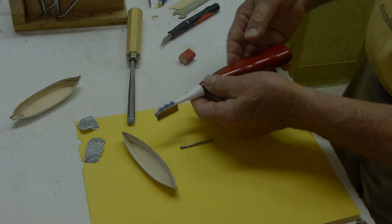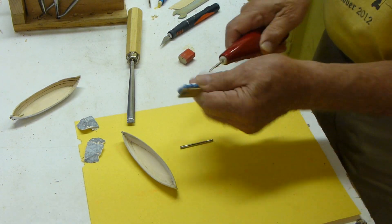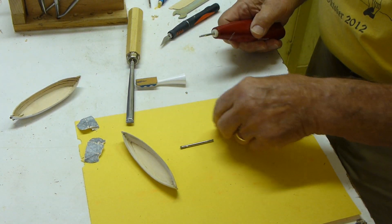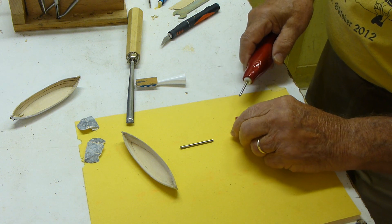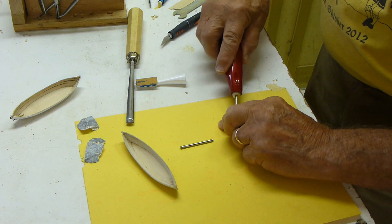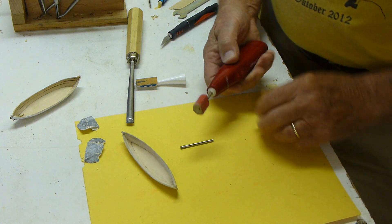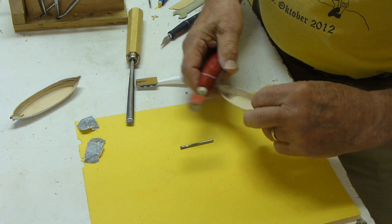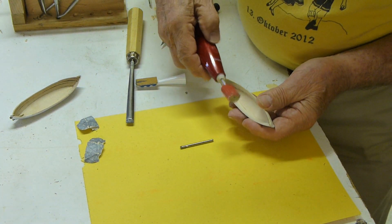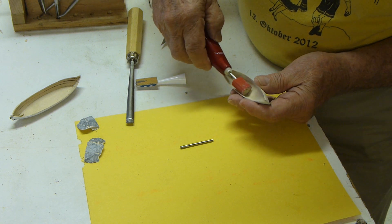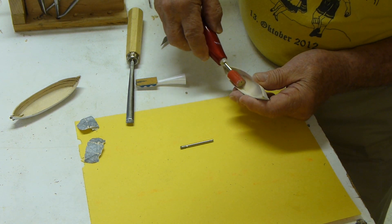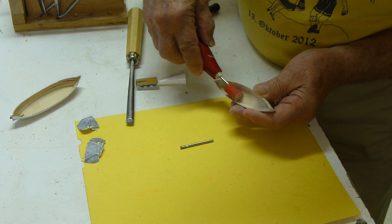First of all, let me show you how I finished the sanding on the inside of the whaleboat with this modified toothbrush. I took the bristle part off, made some little adapters out of wood covered with sandpaper. That worked quite well to give the inside a reasonably smooth finish.